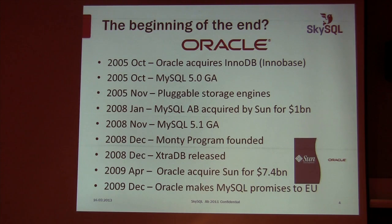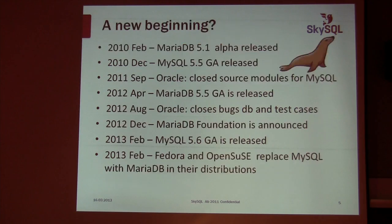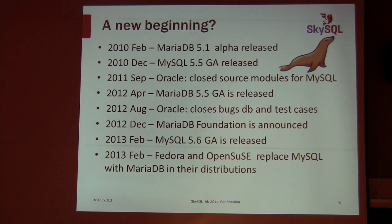Who knows what's going to happen to MySQL after that. In 2010, MariaDB 5.1 was released as the first alpha version — the first version of the fork. It took quite a while to get recognition, but there it was.